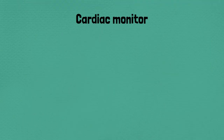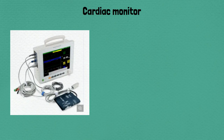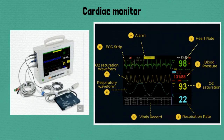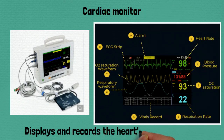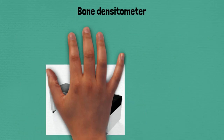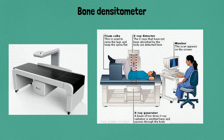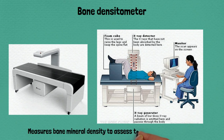Sixty-six: cardiac monitor, displays and records the heart's electrical activity. Sixty-seven: bone densitometer, measures bone mineral density to assess the risk of osteoporosis.